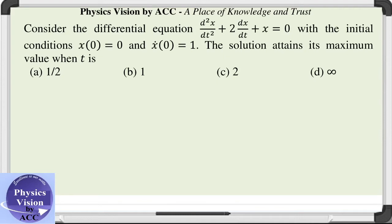Welcome back dear students to Physics Vision classes. The given question is: consider the differential equation d²x/dt² + 2(dx/dt) + x = 0 with the initial conditions x(0) = 0 and ẋ(0) = 1. We need to find the value of t when the solution x attains its maximum.